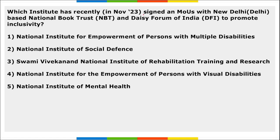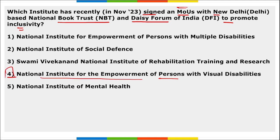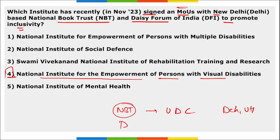First question: which institution recently signed an MOU with New Delhi-based National Book Trust and Daisy Forum of India to promote inclusivity? The answer is the National Institute for the Empowerment of Persons with Visual Disabilities (NIEPVD). The MOU with NBT aims to establish a universal design center for reading in Dehradun, Uttarakhand, and the MOU with DFI is to create accessible books through Sugamya Pustakalaya.